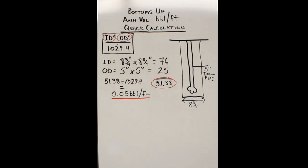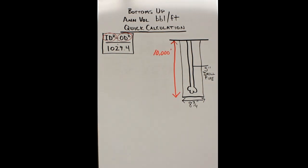Nice work. Now we need to finish this off by taking the total length of your pipe in the hole, which is 10,000 feet, times by 0.05, and it gives you 500 barrels. 500 barrels is the total volume in the annulus that's all around this drill pipe here.